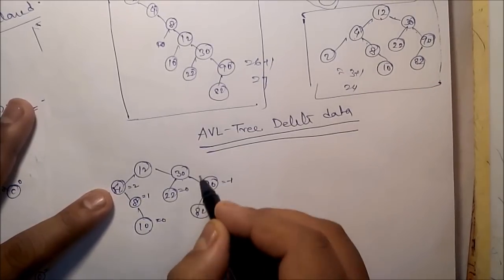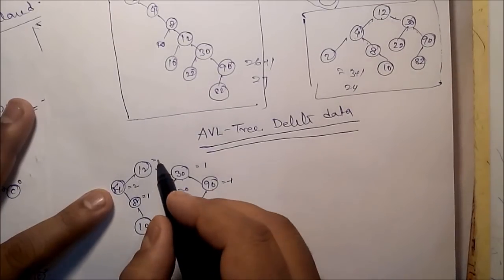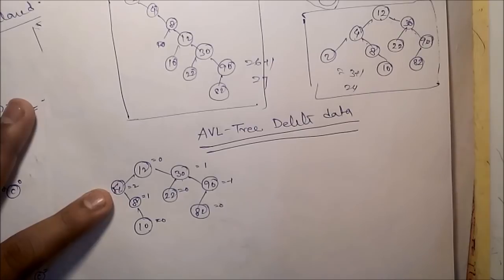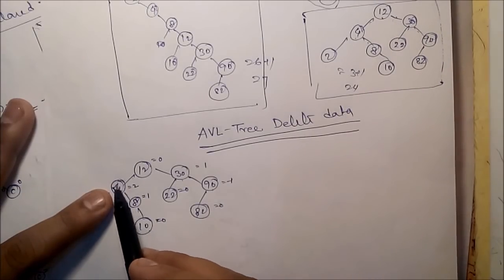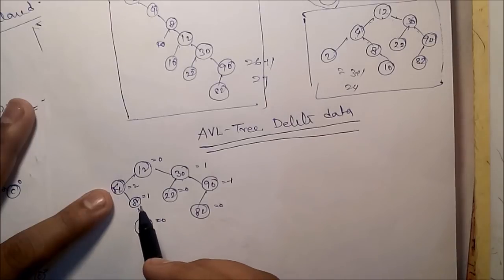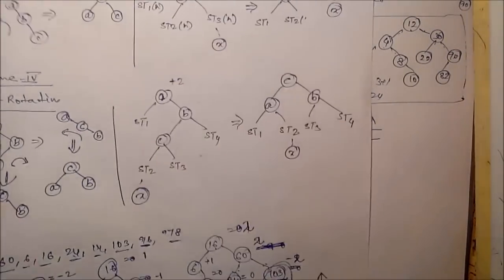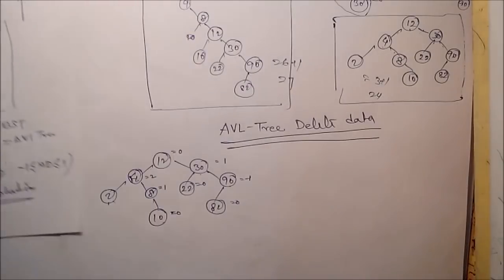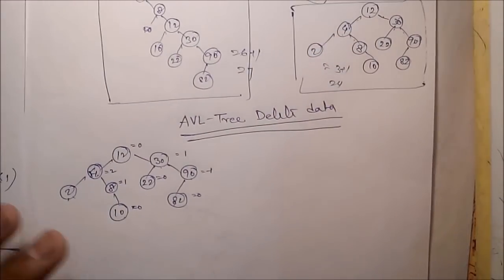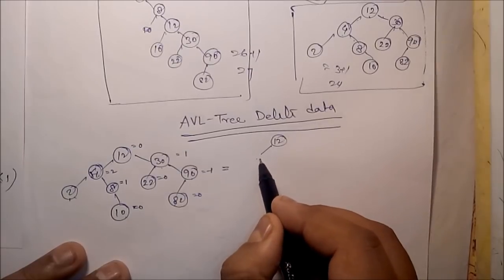The height differences are: 0, minus 1, 0, 1, and here it is 1, 2, 3 — making it 0. It is not balanced because of this particular node. The critical node is node 4. So we have to apply rotation. We may apply this particular Case 3.